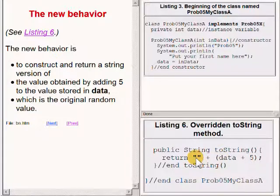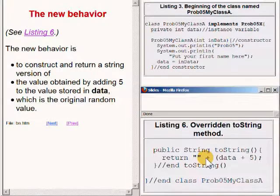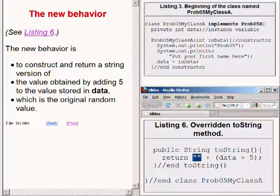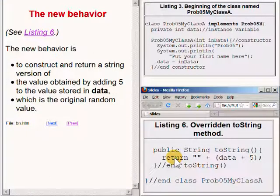In case you are unfamiliar with this technique, an easy way to convert a numeric value to a string value in Java is simply to use the concatenation operator and concatenate that numeric value with an empty string, as defined by a pair of quotation marks. Therefore, the overridden toString method returns a string that represents a value that is five greater than the original random value.